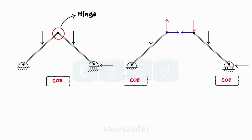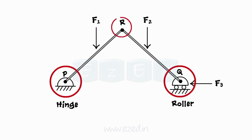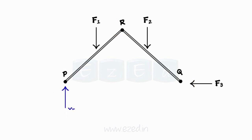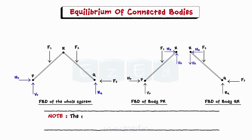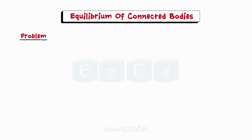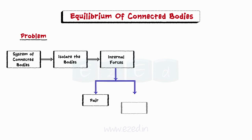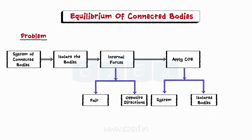Internal forces have the same magnitude and line of action but opposite direction. Consider a system of two connected bodies as shown in the figure. The external supports are the hinge at P and the roller at Q. The internal connection is a hinge at R. The FBD of the whole system and the isolated bodies are shown. Note that the direction of Hr and Vr on member PR is opposite to that on member QR. The internal forces appear in pairs with opposite directions at the internal connection, and COE is applied to the system as well as isolated bodies to calculate the unknowns.